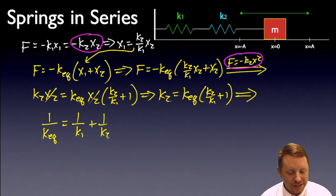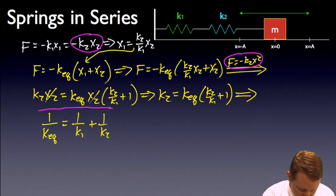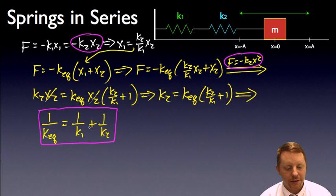Kind of looks like resistors in parallel, or capacitors in series. Very very close analogy here. So, we have a formula now for the equivalent spring constant for springs that are in series.